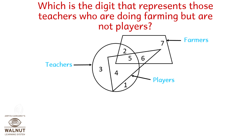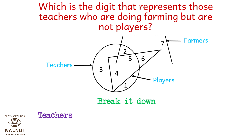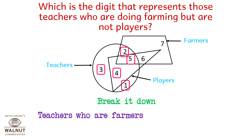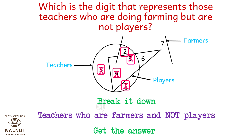Which is the digit that represents those teachers who are doing farming but are not players? Let us break it down. First we find the teachers: 3, 4, 1, 2, 5. Then we find who are farmers — cancel out 3, 4, and 1 — which leaves us 2 and 5. Now we find who are not players, so we cancel out 5 and get the answer: 2.